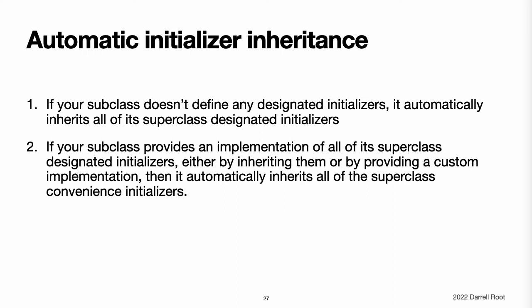Rule 1: if your subclass does not define any designated initializers, it automatically inherits all of its superclass designated initializers. Rule 2: if your subclass provides an implementation of all of its superclass designated initializers — either by inheriting them as per Rule 1 or by providing a custom implementation as part of its definition — then it automatically inherits all of the superclass convenience initializers. These rules apply even if your subclass adds further convenience initializers. Note: a subclass can implement a superclass designated initializer as a subclass convenience initializer as part of satisfying Rule 2.